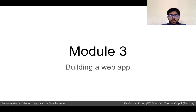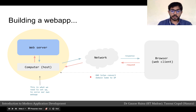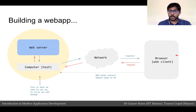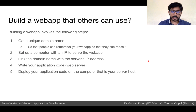Welcome to Module 3. We're going to talk about building a web app. The main objective in this course is to get a basic understanding of how one would even try to build a web app. Let's do a quick recap of what we covered in the last module: when a browser makes a request to a web server, the browser makes a request through the network onto the computer host, the web server processes the request and returns the response through the network back to the browser.